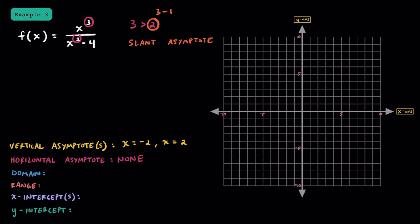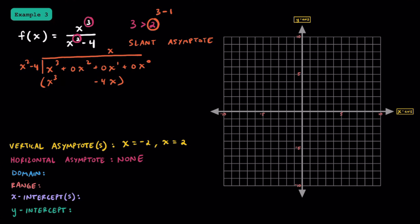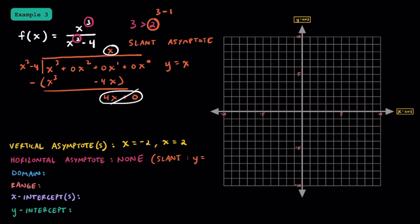Since we have degree 3 divided by degree 2, which gives degree 1, we're going to have a linear slant asymptote. To find the equation of this line, we can use long division. Don't forget to write in your placeholders. We divide by x squared minus 4. We put x in the quotient; x times x squared is x cubed, and x times negative 4 is negative 4x. Subtracting, we get a remainder of 4x. We can ignore this remainder, and the equation of our slant asymptote is y equals x.